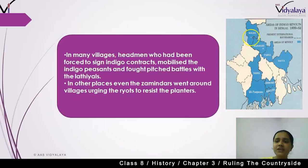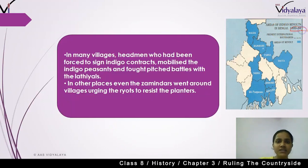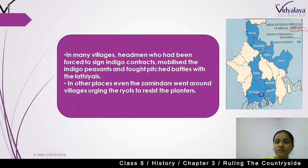Here, look at this map — these are the areas of indigo revolts in Bengal that started in 1859 and continued to 1862. Please remember these dates. These regions are: Bengal, Malda, Rajshahi, Dhaka, Nadia, and 24 Parganas — all regions where the indigo revolt started in Bengal.